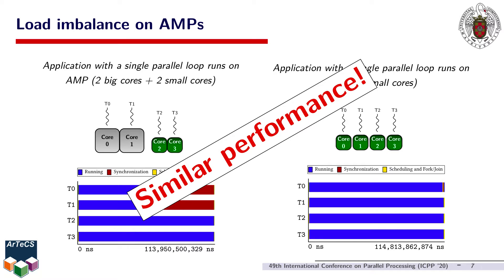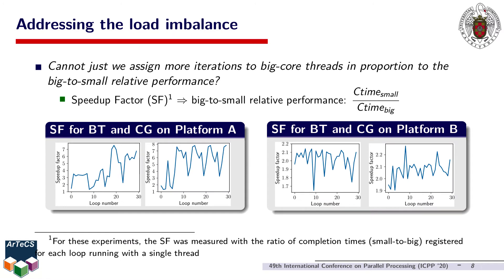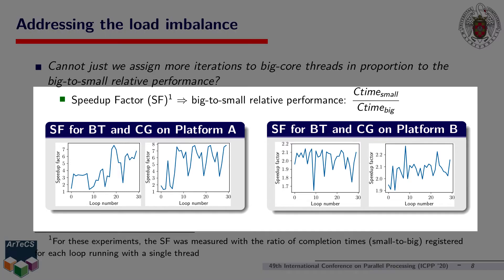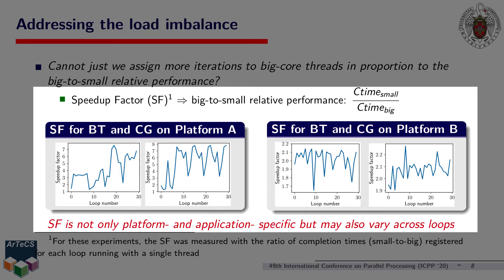That's exactly what we observed with the EPP program from NAS Parallel Benchmarks. Balancing the load seems simple — why not systematically assign more iterations to big core threads in proportion to the relative performance that a big core delivers versus a small core? To refer to this relative performance, we use the term speedup factor or SF. In this work, we measured the speedup factor of individual loops for different applications running on two different AMP platforms. We found that not only is the speedup factor platform and application specific, but it may also greatly differ across loops.